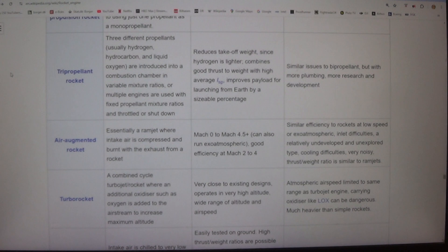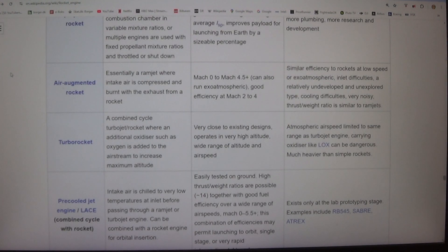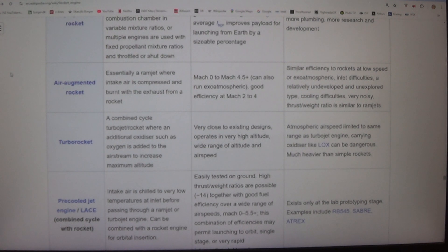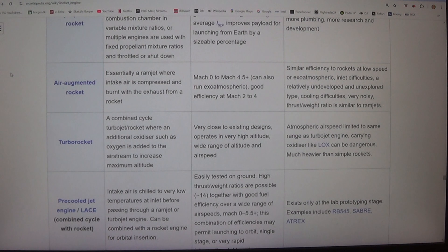Air augmented rocket - essentially a ramjet where intake air is compressed and burnt with the exhaust from a rocket. Mach 0 to Mach 4.5+. Can also run exo-atmospheric. Good efficiency at Mach 2 to 4. Disadvantages: Similar efficiency to rockets at low speed or exo-atmospheric. Inlet difficulties. A relatively undeveloped and unexplored type. Cooling difficulties. Very noisy. Thrust/weight ratio is similar to ramjets.